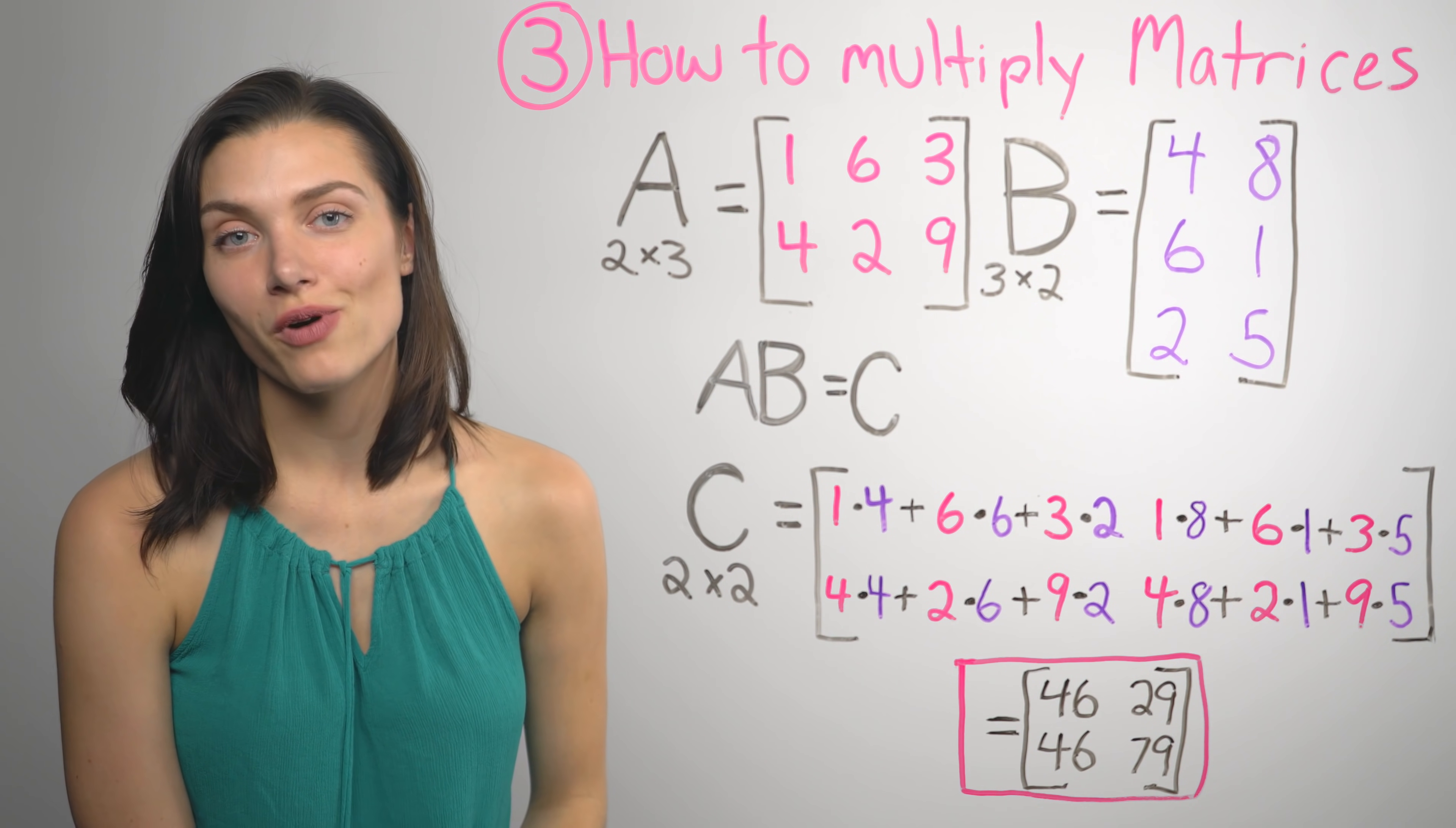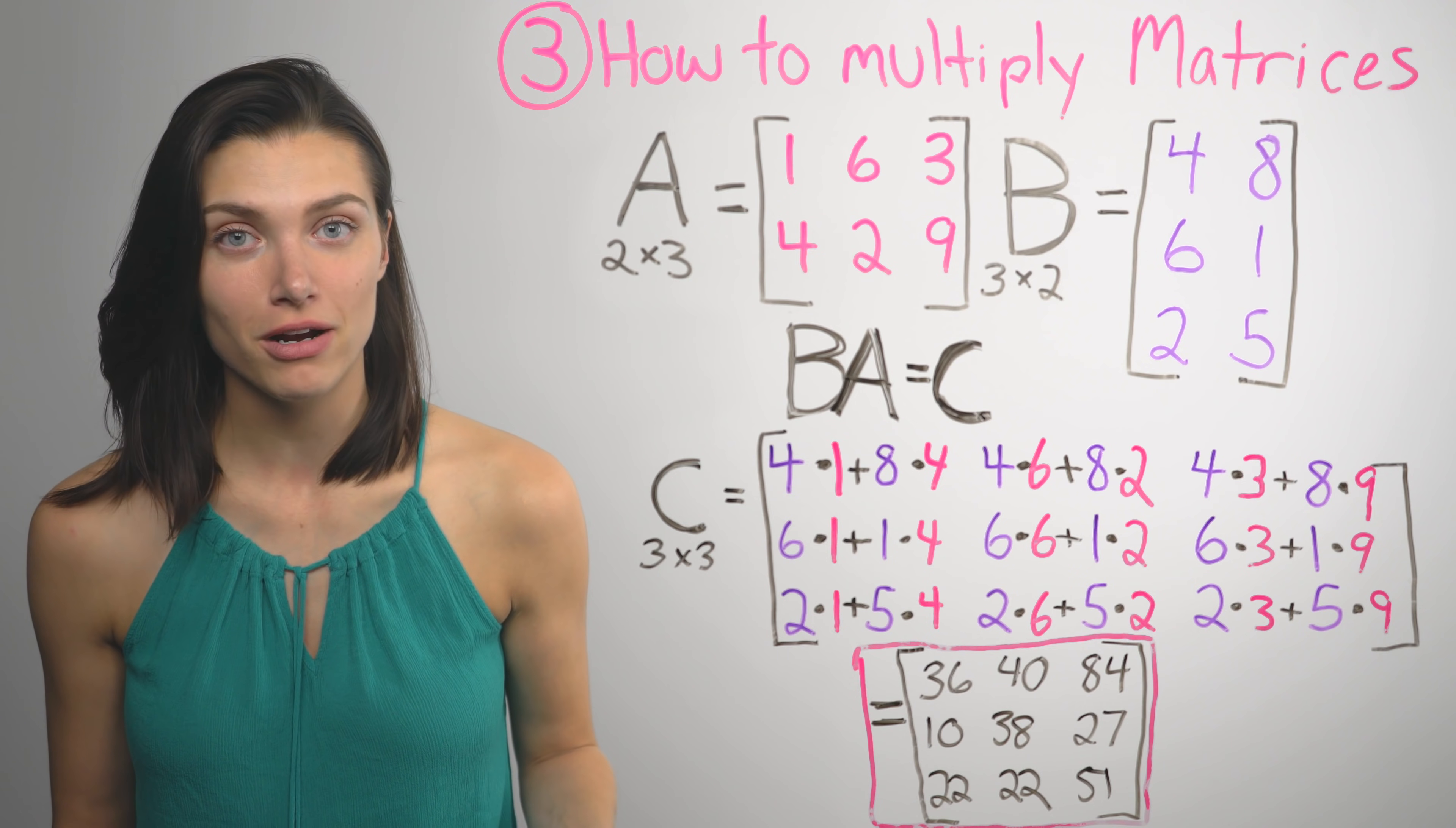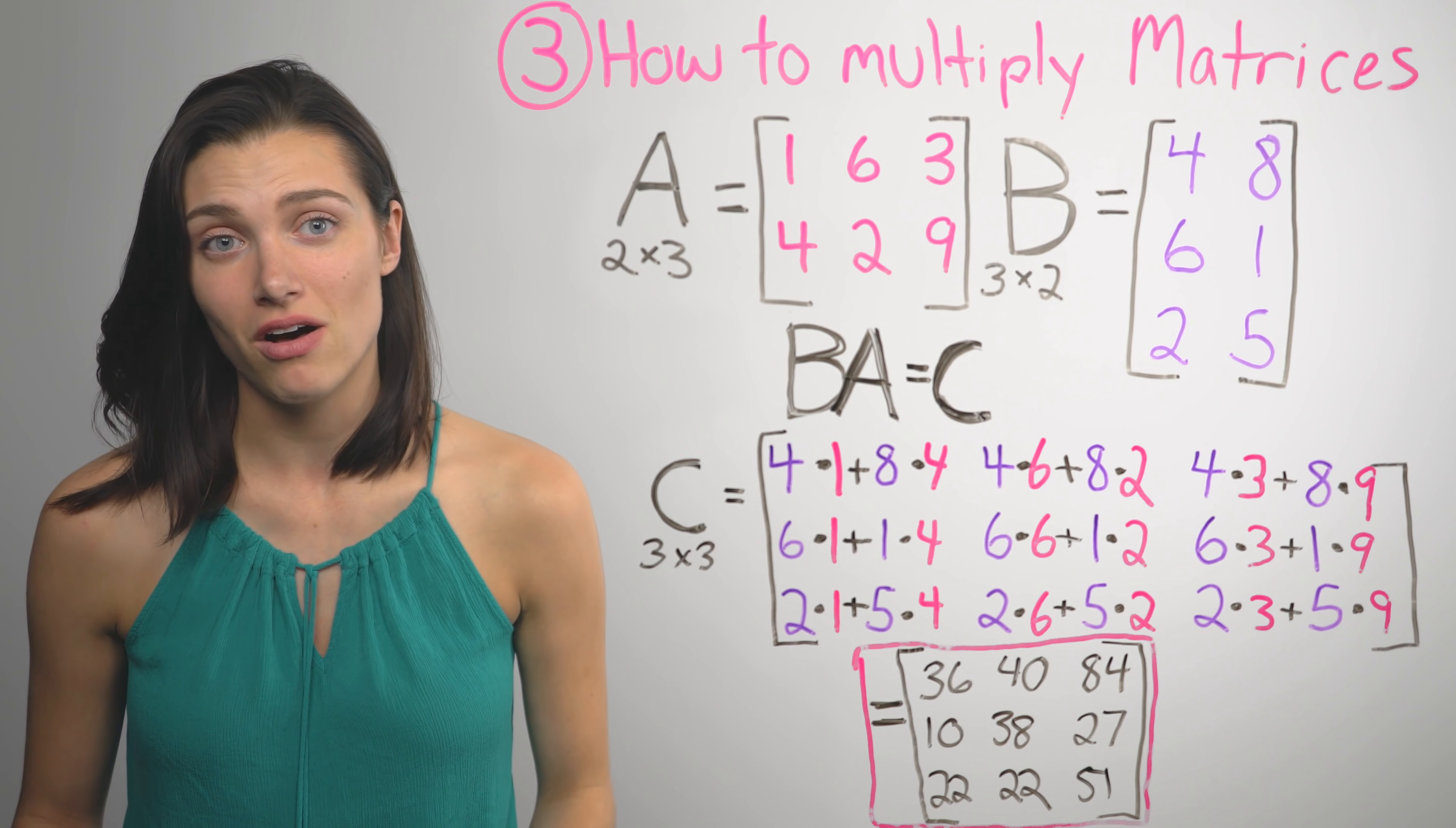So what if the equation were this? And then you would get this. And because the outer and inner numbers are different when you change the order of variables, the size of the answer changed. So keep that in mind. If you change the order of matrices being multiplied, you're going to get a totally different answer. And sometimes you won't be able to multiply at all.